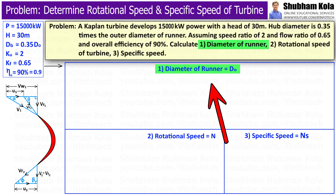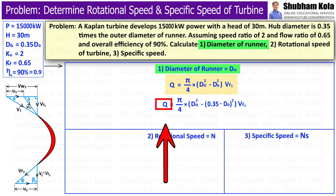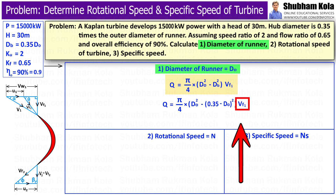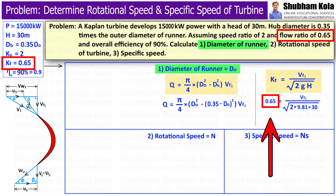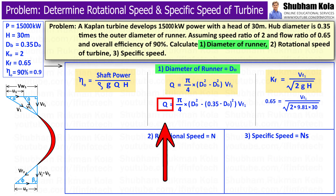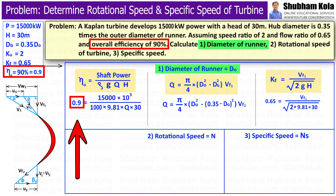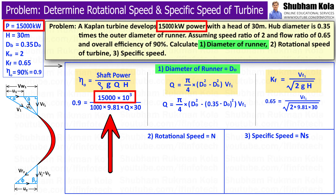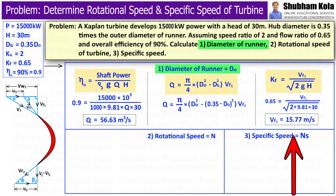First, we want to calculate the diameter of the runner using the discharge formula, writing db in terms of Do. We need to calculate discharge Q and velocity of flow at inlet Vf1. Vf1 can be calculated from the flow ratio, which is given as 0.65 with head 30 meters. Discharge Q is calculated from the overall efficiency formula — efficiency 0.9, shaft power 15,000 kW — giving Q equal to 56.63 m³/s and Vf1 equal to 15.77 m/s.